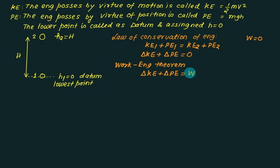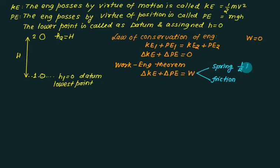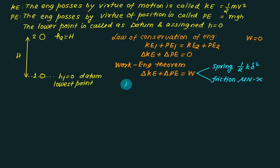Work arises from two sources: work due to a spring and work due to friction. Work due to a spring is given by one-half k times delta squared, where k is the spring stiffness in newtons per meter and delta is the deflection in meters. Work due to friction is given by the friction force mu times N, multiplied by the displacement x.